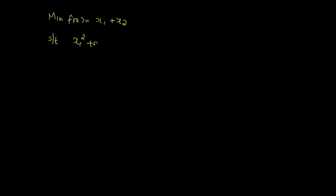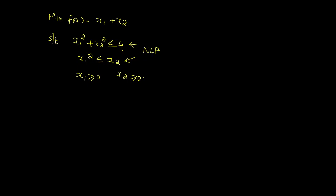The constraints are: x1² + x2² ≤ 4, x1² ≤ x2, x1 ≥ 0, and x2 ≥ 0. This is not a linear programming problem since the first two constraints are not linear — it is a non-linear programming problem. Let us check the convexity of this problem.